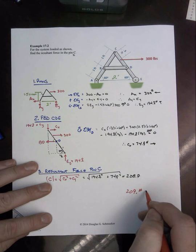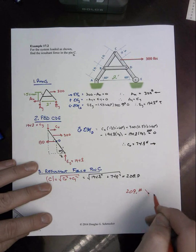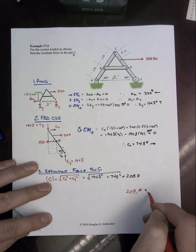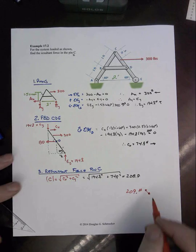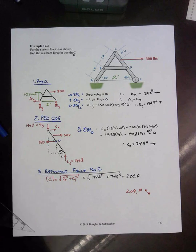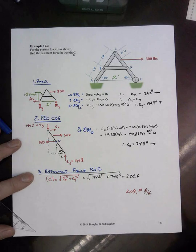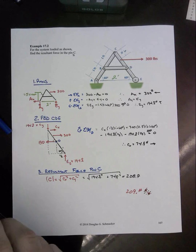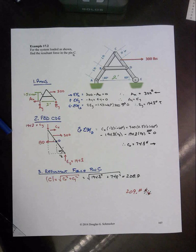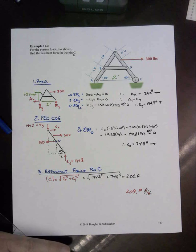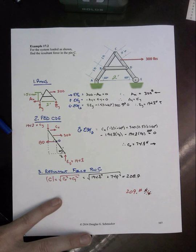But we have 208.7, rounded up to 209 pounds, and it would be acting sort of in this direction or that direction depending on what side of the pin we were talking about. So because that's sort of arbitrary, it doesn't really make any sense to report that direction at the moment. Later on we'll talk about pins that are in single shear, double shear, and that would matter. The magnitude will matter for the design of the pin itself.